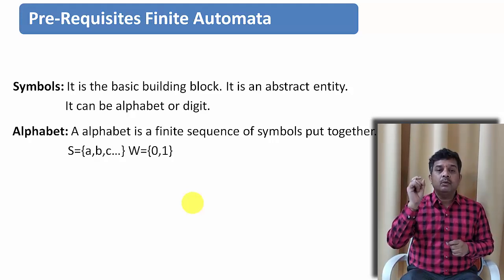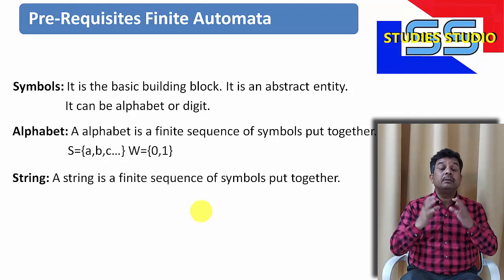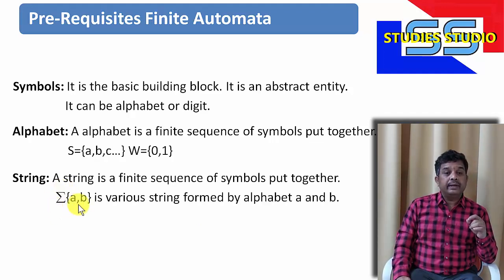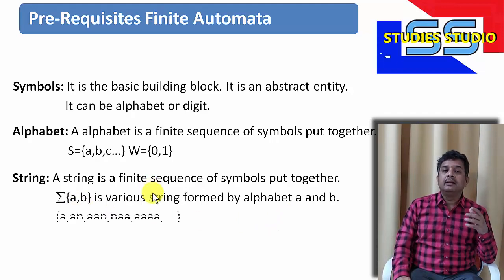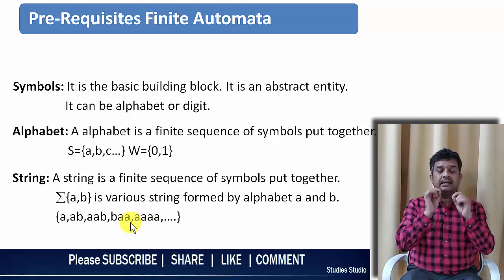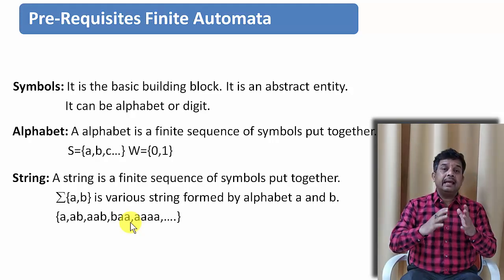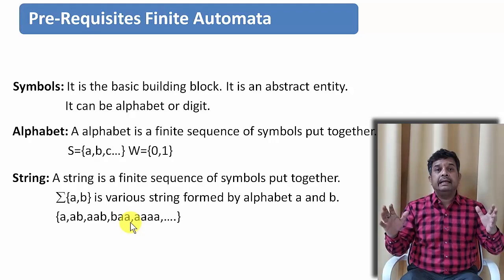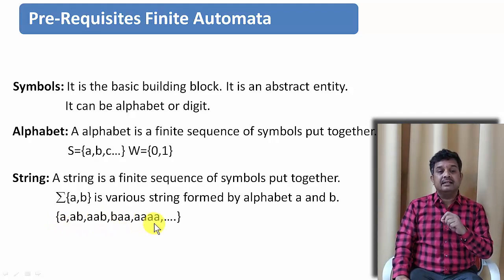By taking symbols from the alphabet, we construct words or strings. A string is a finite sequence of symbols put together. If we are saying that we want to take our input symbols as only A and B, then I can form various strings using A and B only — like A, AB, AAB, BAA, AAAA, and so many others. Starting with single alphabet A, then single alphabet B, then combinations like AB, BA, then AAB, and so on. I can have strings of any length.